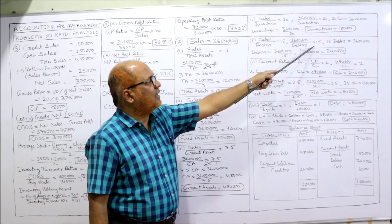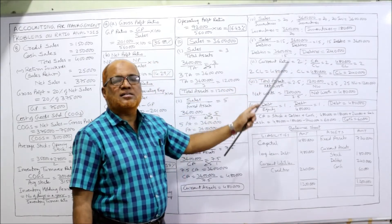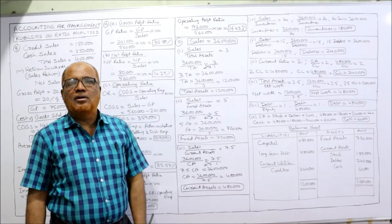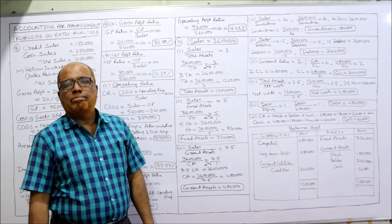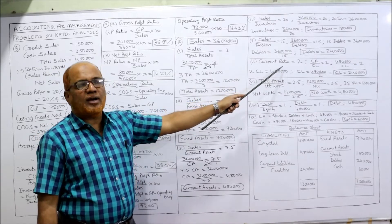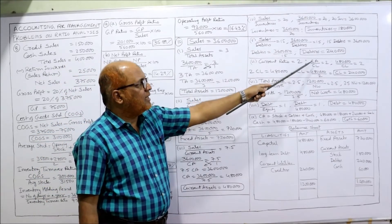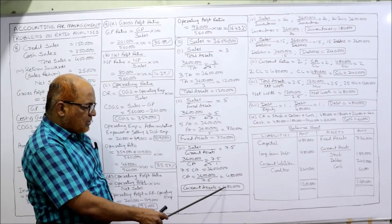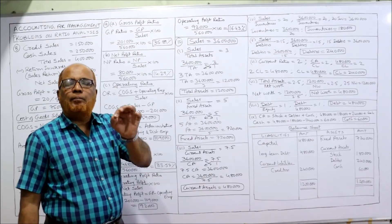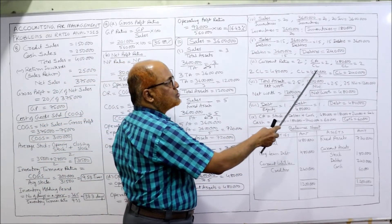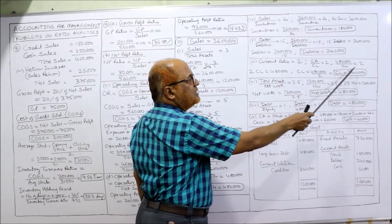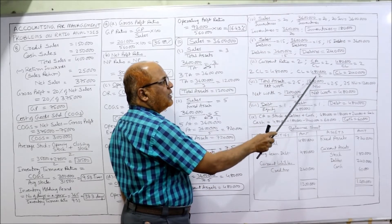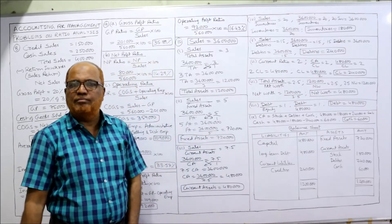Next ratio: sales by debtors = 15. So 36 lakh divided by debtors = 15. Debtors = 36 lakh divided by 15 = 2,40,000. Current ratio is given as 2. Formula: current assets divided by current liabilities = 2. Current assets are 4,80,000, so 4,80,000 divided by current liabilities = 2. Cross multiply: current liabilities = 4,80,000 divided by 2 = 2,40,000.